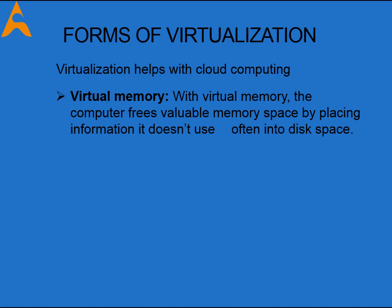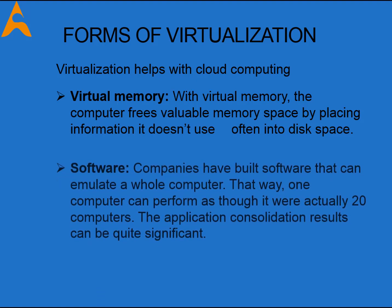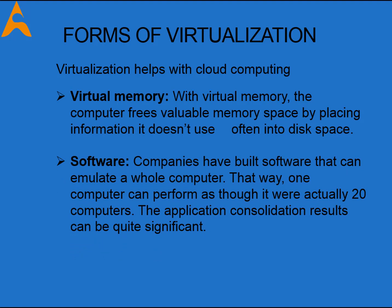PCs have virtual memory, which is a disk area used like memory. Although disks are very slow in comparison with memory, the user may never notice the difference if the system does a good job of managing virtual memory. Software companies have built software that can emulate a whole computer, so that one computer can perform as though it were actually 20 computers. The application consolidation results can be quite significant — for example, you might be able to move from a data center with thousands of servers to one that supports as few as a couple of hundred. This reduction results in less money spent not only on computers, but also on power, air conditioning, maintenance, and floor space. Hope you liked this session — we will get back with some more interesting topics. Thank you, happy learning!